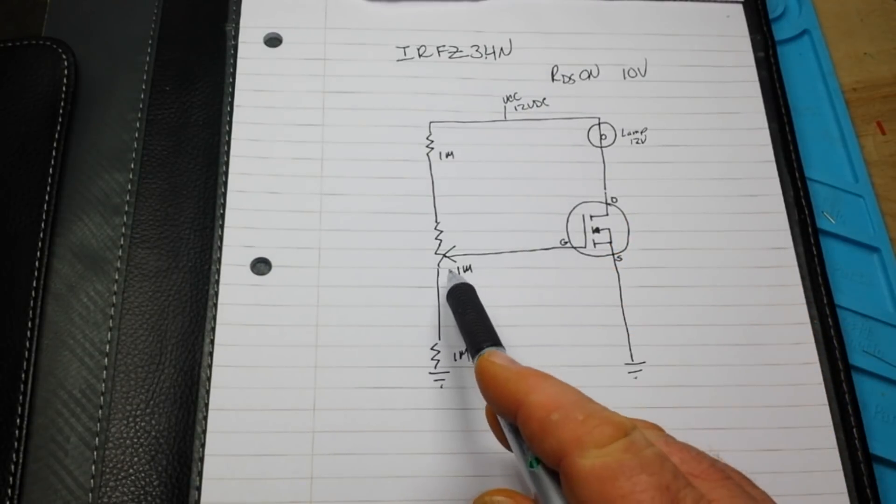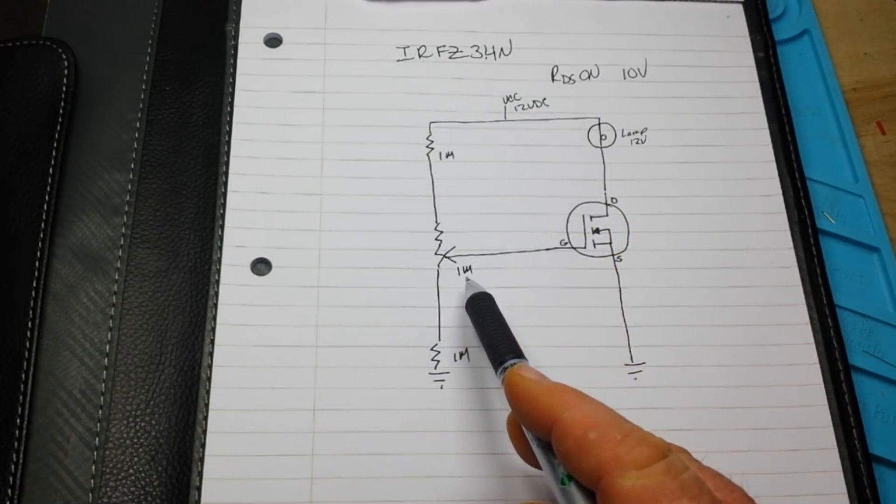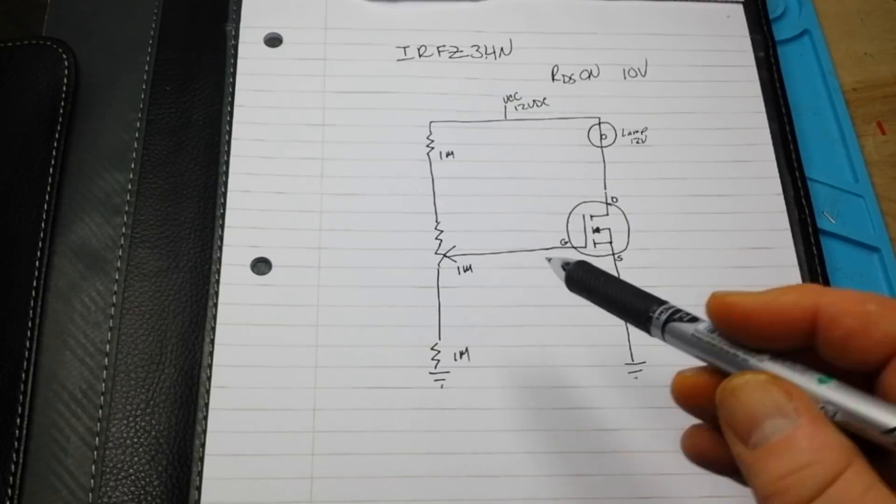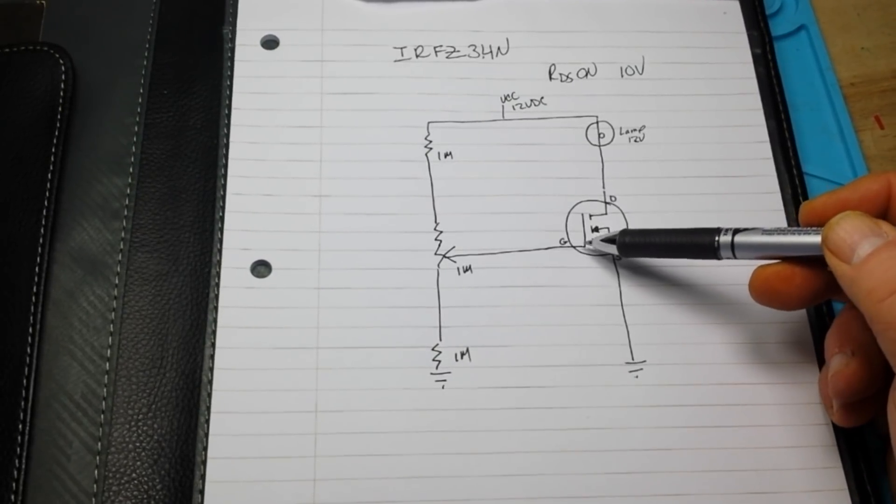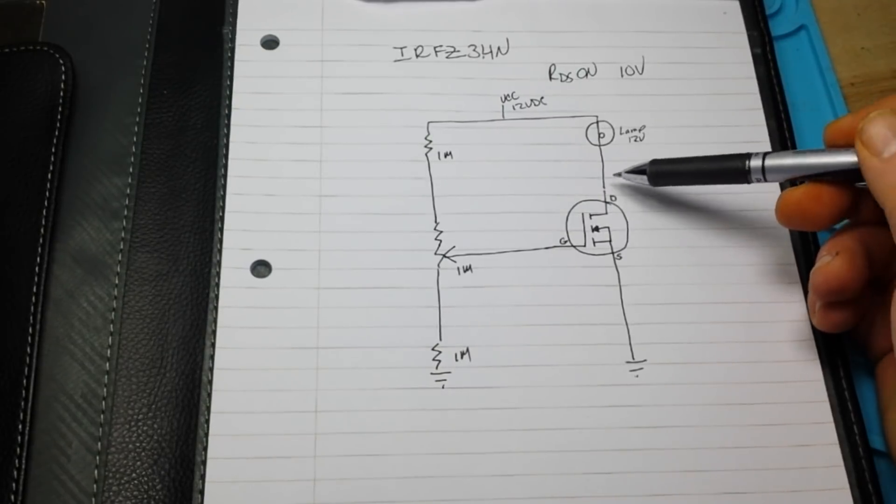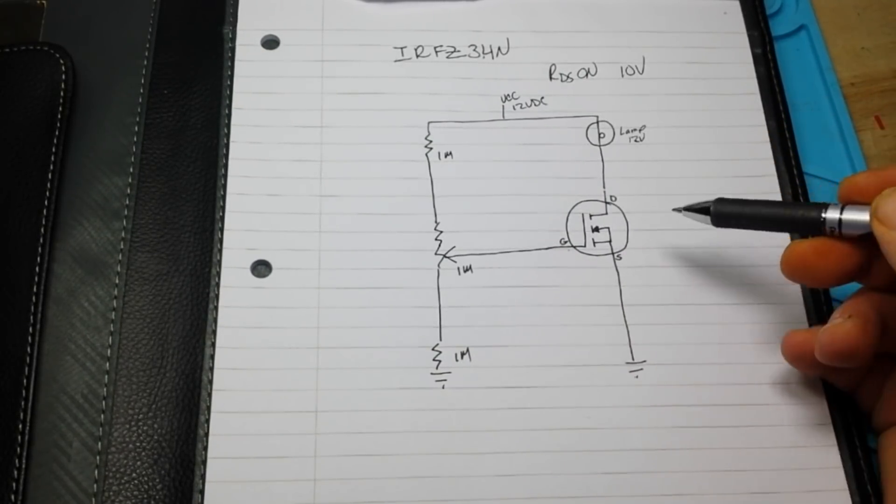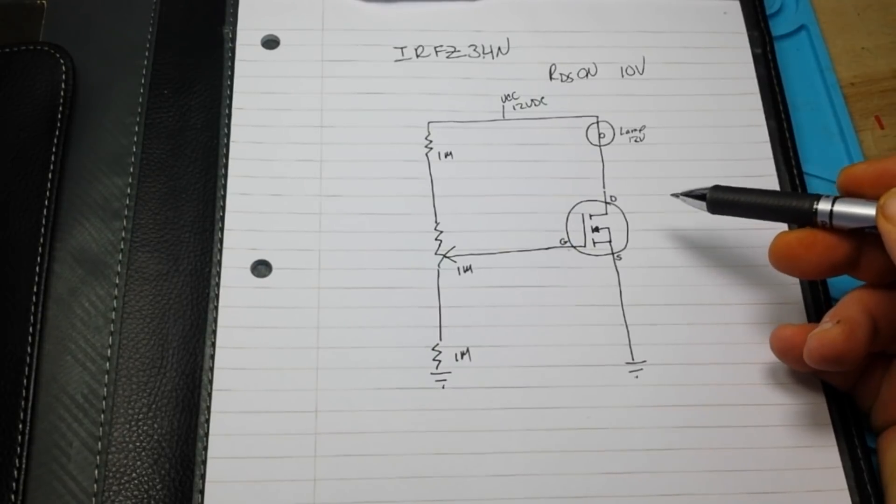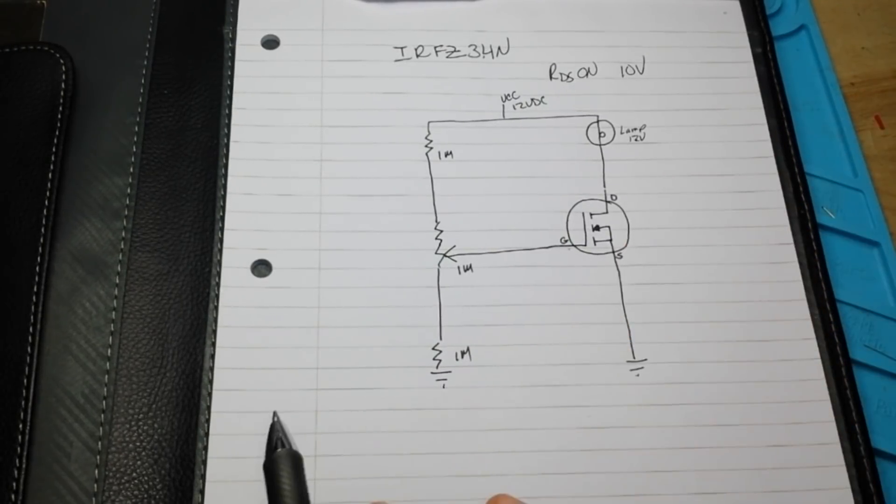And then simply by varying this resistor here, we are able to change the gate voltage and change the draw on the lamp because small voltage here causes a large voltage here. That's the beauty of the MOSFET.